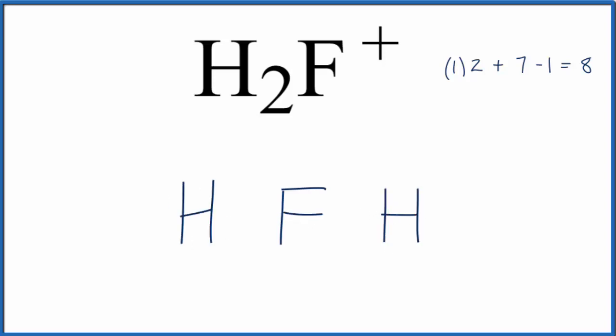Next, we'll put two valence electrons between the H and the F to form a chemical bond. So we'll put two here, and then two right here. We've used four valence electrons. We have a total of eight.